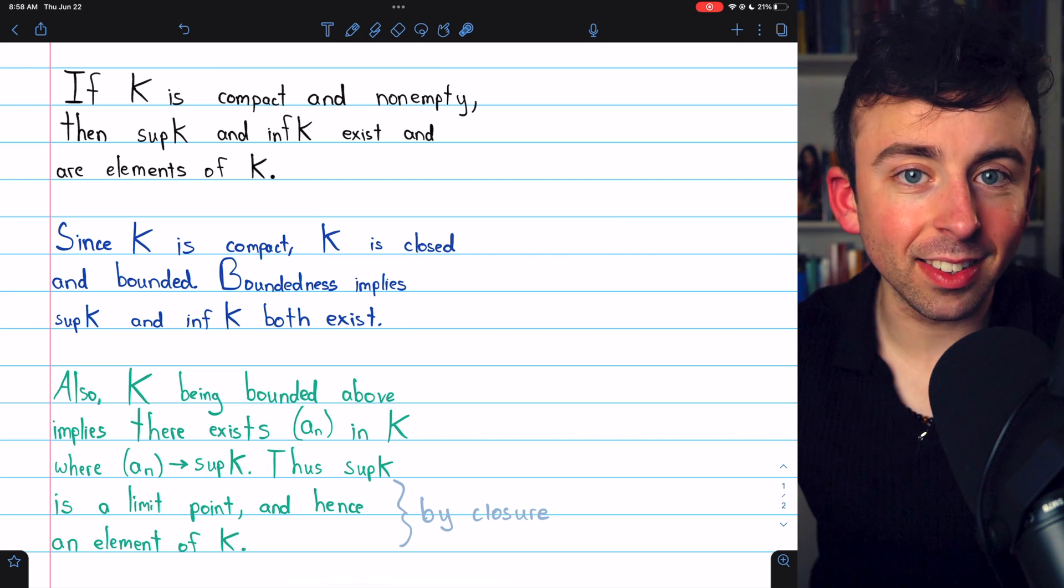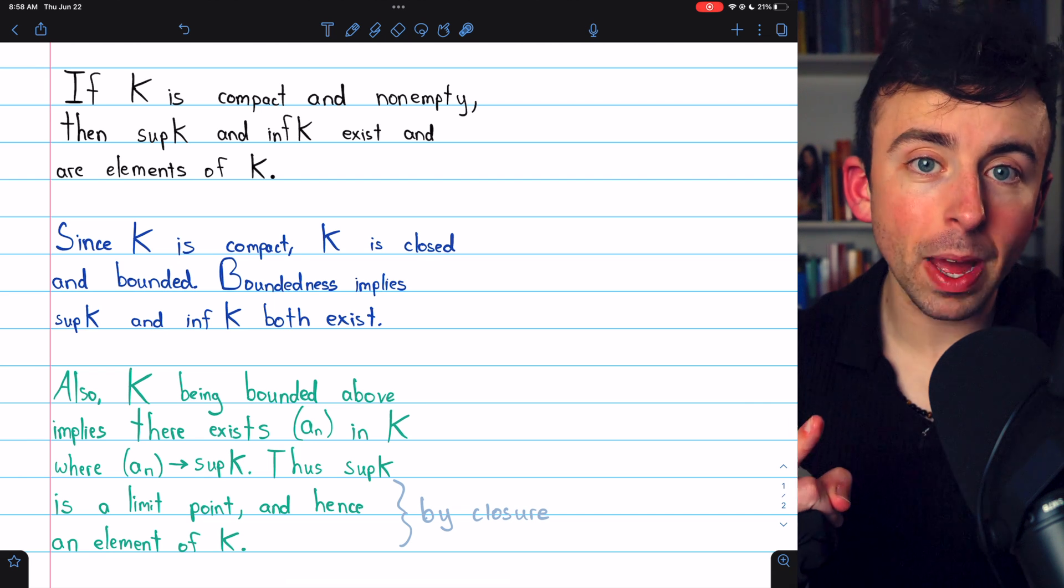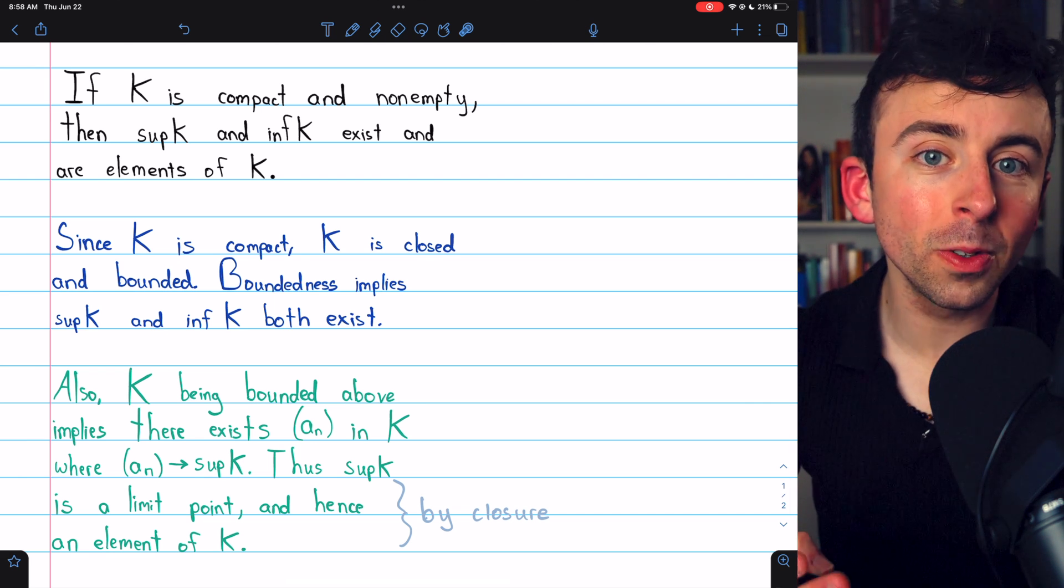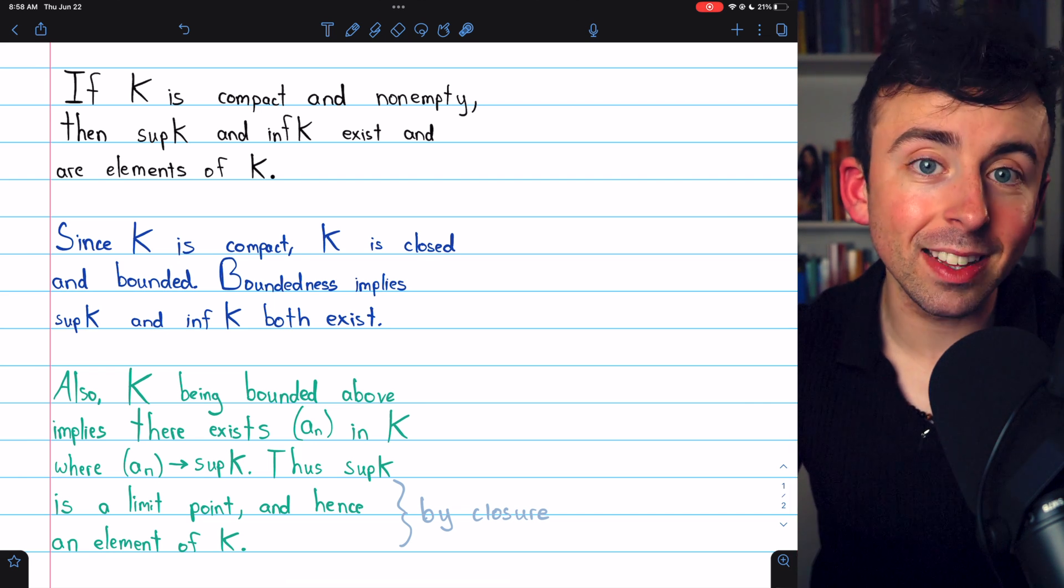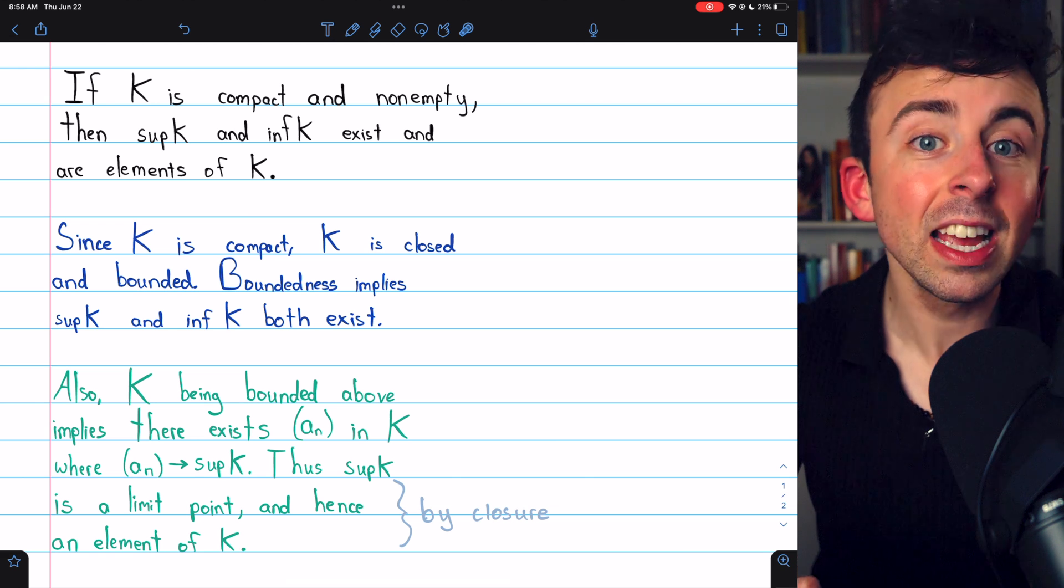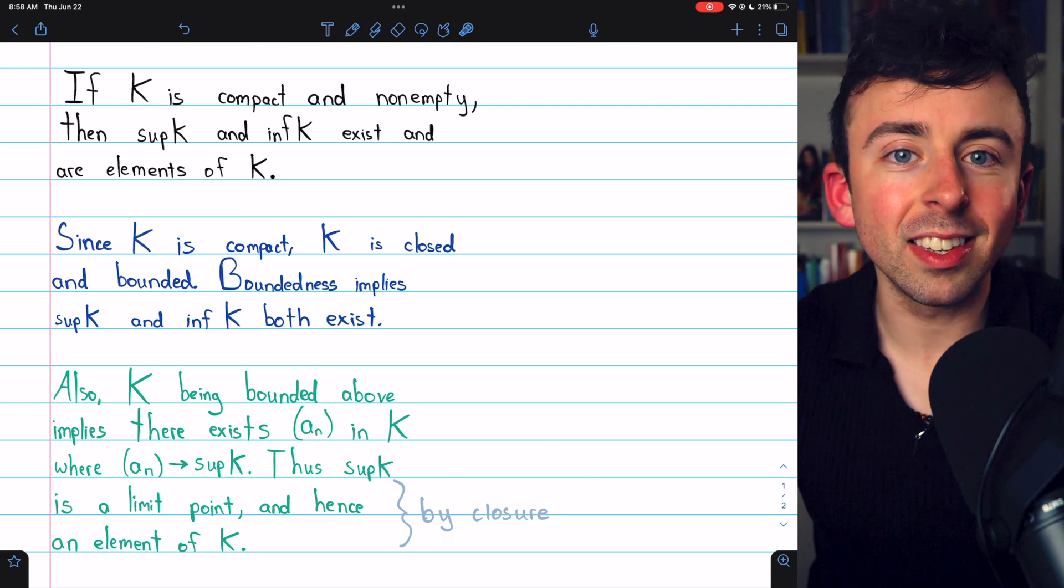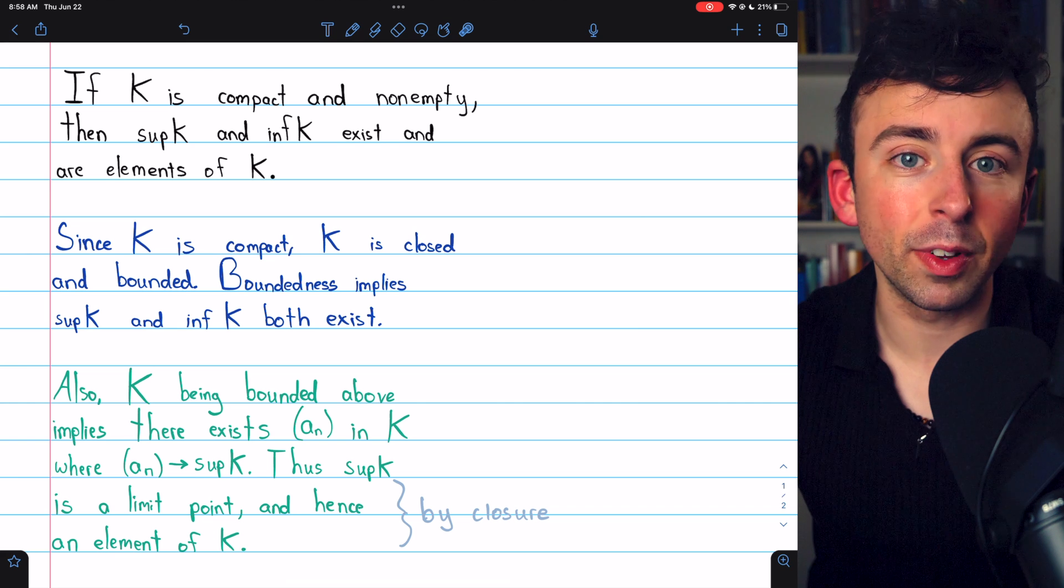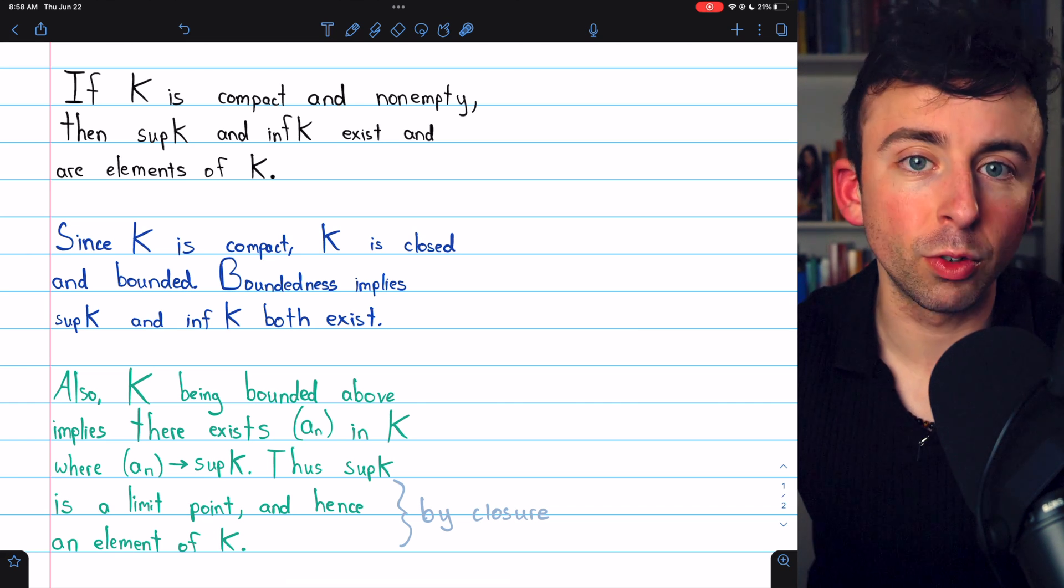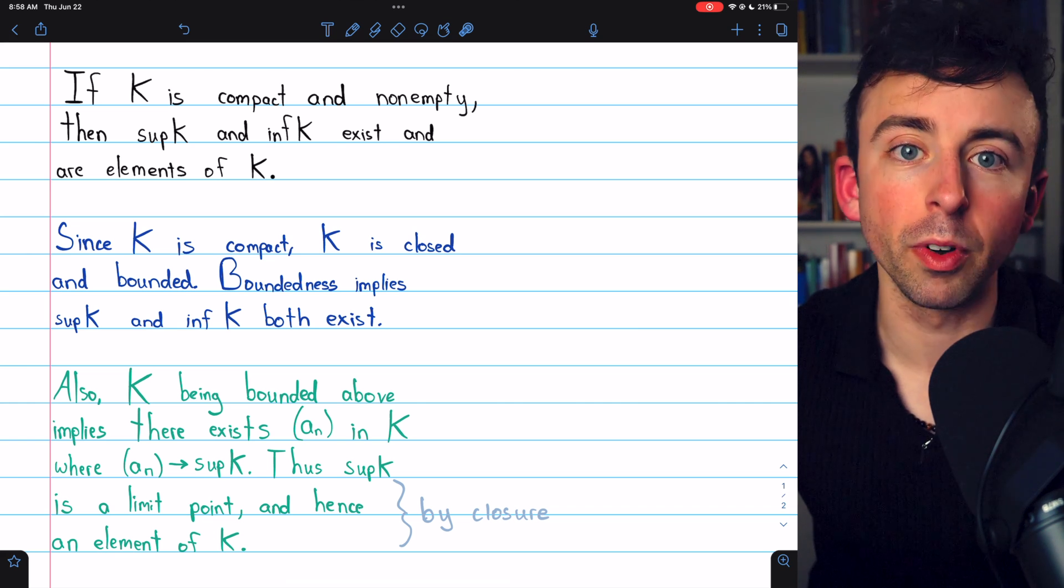Once more, we know K contains its limit points because it's compact, which means it's closed, and a set being closed means that it contains its limit points. Sometimes that's given as the definition of closed. Sometimes it's given as an equivalent definition. Either way, you can check the description for links to videos where we prove all this stuff.